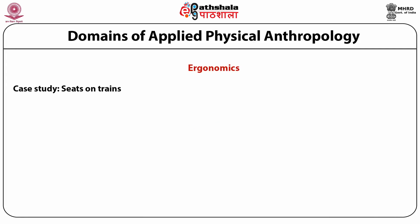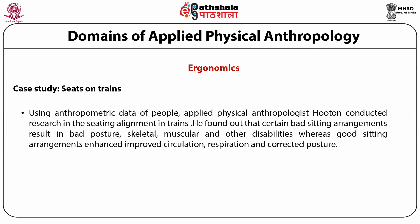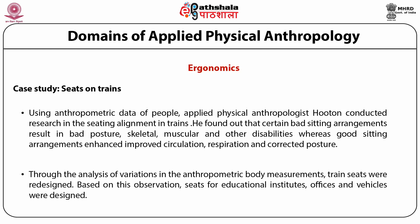Case study — Seats on Train: using anthropometric data, applied anthropologist Houghton conducted research on seating alignment in trains to make more comfortable seats. He found that certain bad seating arrangements result in bad posture, skeletal, muscular and other disabilities, whereas good seating arrangements enhance improved circulation, respiration, and corrected posture. Through the analysis of variation in anthropometric body measurements, train seats were redesigned. Based on this observation, seats for educational institutes, offices, and vehicles were also designed.